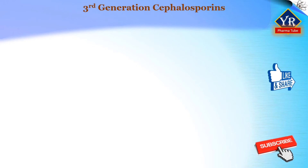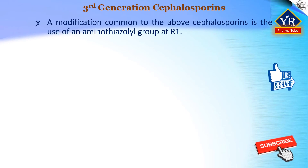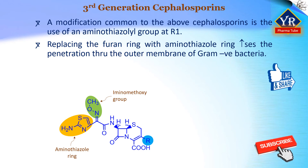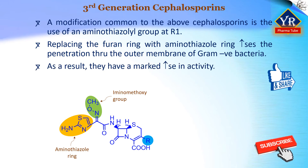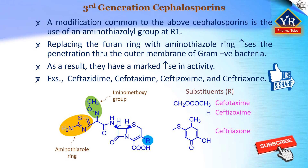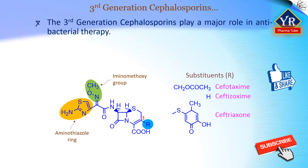Third-generation cephalosporins: A modification common to many of the third-generation cephalosporins is the use of an aminothiazolyl group at R1. Replacing the furan ring of the oxyiminocephalosporins with an aminothiazole ring enhances the penetration of cephalosporins through the outer membrane of gram-negative bacteria and may also increase affinity for the transpeptidase enzyme. As a result, third-generation cephalosporins containing this ring have a marked increase in activity against these bacteria. A variety of such structures have been prepared, such as ceftazidime, cefuroxime, cefotaxime, ceftizoxime, and ceftriaxone, with different substituents at position 3 to vary the pharmacokinetic properties. All these drugs play a major role in antibacterial therapy because of their activity against gram-negative bacteria, many of which are resistant to other beta-lactams.